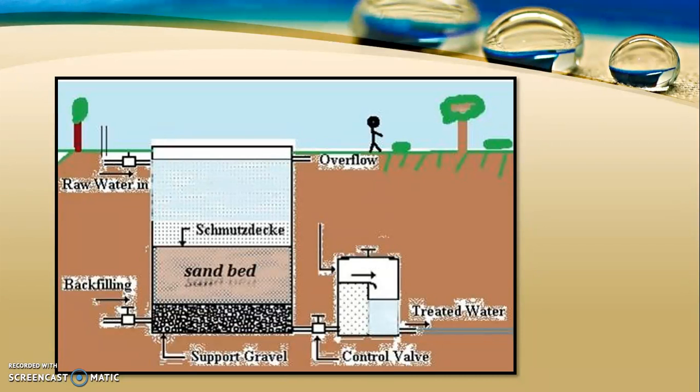To clean a slow sand filter, the entire top sand layer must be scraped out, washed, cleaned, dried, and replaced — requiring significant manual labor. Operation and maintenance problems and clogging of pores are major issues with slow sand filters. To avoid these problems, rapid sand filters are nowadays used for filtration in water treatment plants.